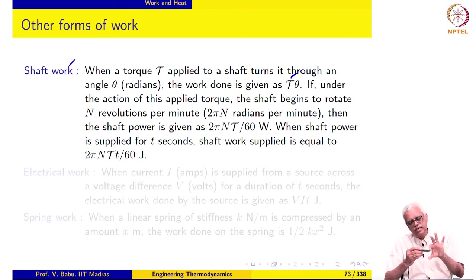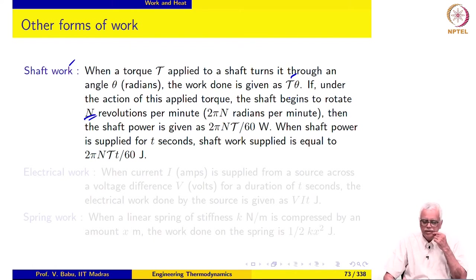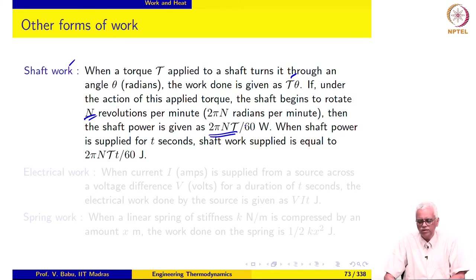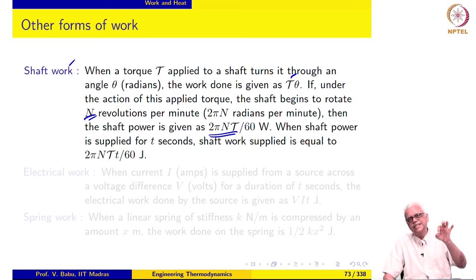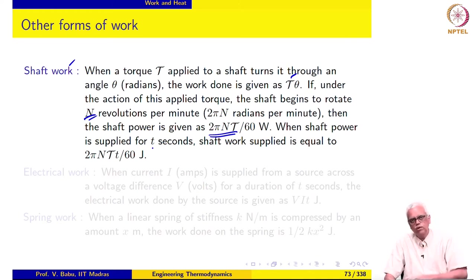If under the action of this applied torque the shaft begins to rotate at a speed of n revolutions per minute, or 2πn radians per minute, then the work done is T times 2πn joules per minute. The shaft power is given as 2πn times torque divided by 60 watts. When we supply shaft power for T seconds to a device, the work supplied equals 2πn times torque times the duration divided by 60 joules. We will use these expressions in examples later on.